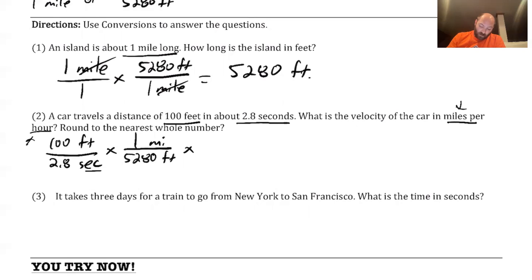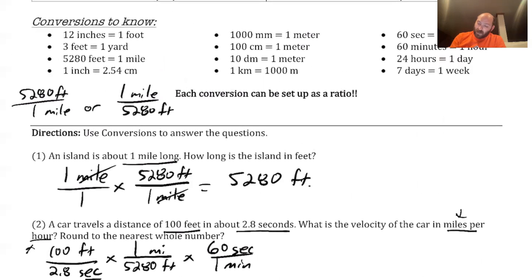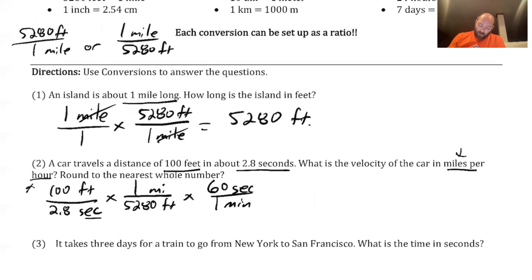The other thing I got to do is I need to turn seconds into hours. So 100 feet in 2.8 seconds, that means I have 60 seconds in one minute. So I'm kind of going back up here, I kind of just remembered it, but 60 seconds in one minute, but then also 60 minutes in one hour. So that means I need to do that again. So 60 seconds in one minute, and then 60 minutes in one hour.